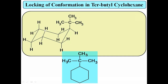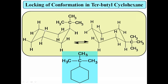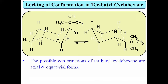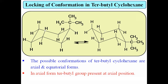In the first chair conformation, the tertiary butyl group is present at the axial position. In the second chair conformation, the tertiary butyl group is present at the equatorial position. So the two possible conformations of tertiary butyl cyclohexane are: one axial chair conformation and one equatorial chair conformation.